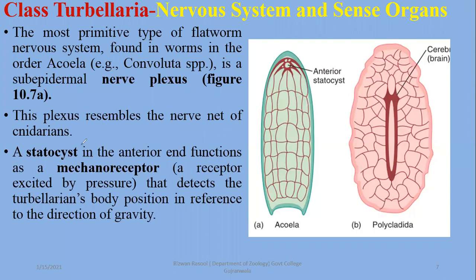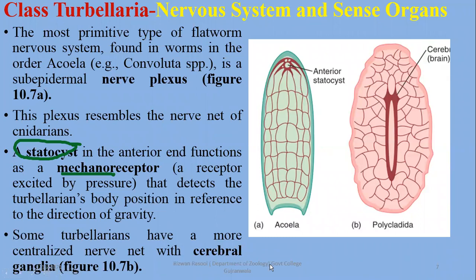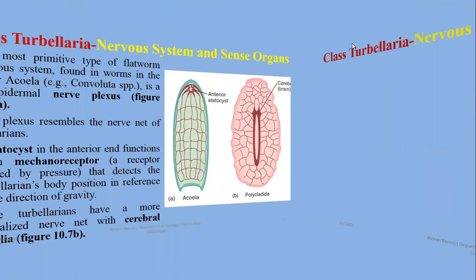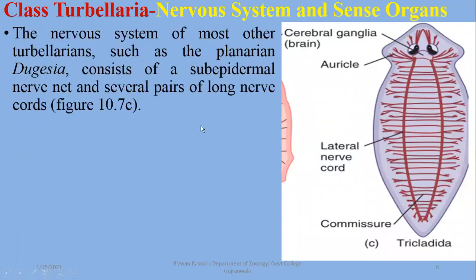On the anterior side, there is a statocyst, which acts as a mechanoreceptor. It detects the turbellarian body position with reference to the direction of gravity. In some turbellarians, like Polycladida, there is a cerebral ganglia — a cluster of cell bodies of neurons. The most developed nervous system in turbellarians, such as planaria, consists of a sub-epidermal nerve net and pairs of long nerve cords.